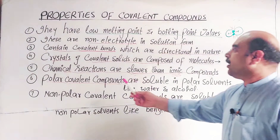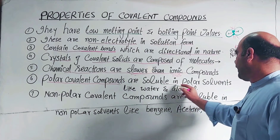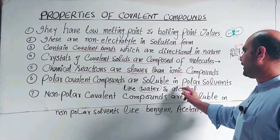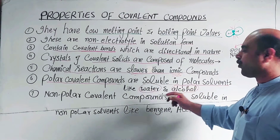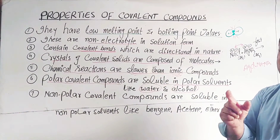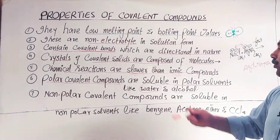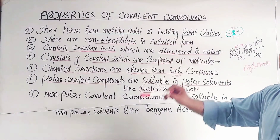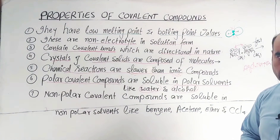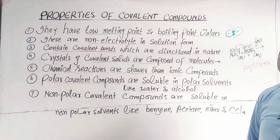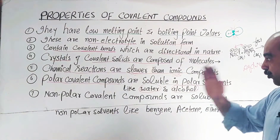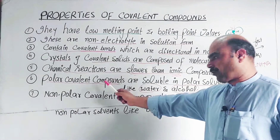Property number six: polar covalent compounds are soluble in polar solvents. Covalent compounds can be polar or non-polar. Polar covalent compounds dissolve in polar solvents such as water and alcohol. The solubility follows the general rule: like dissolves like.